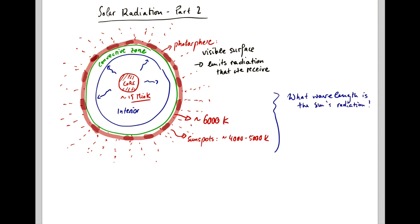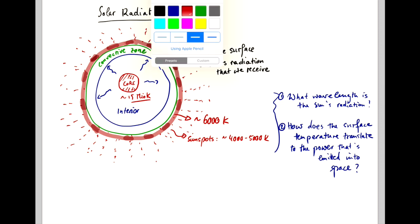And maybe even more importantly, how does the surface temperature, the 4,000 to 6,000 Kelvin that we observe, translate to power that's emitted from the Sun into space? And there's two laws that answer these two questions, one and two, that physicists have derived.